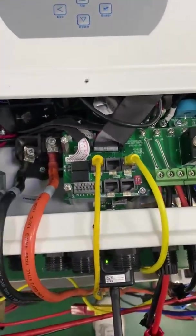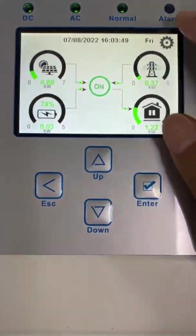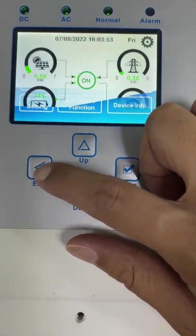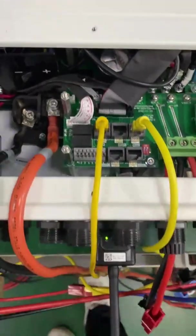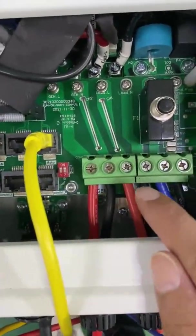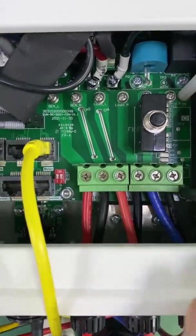Now here is the connection area. Here is the grid port, and the load port, and the generator port.